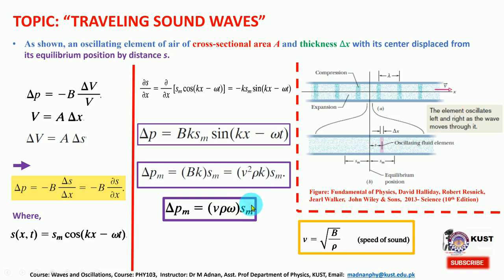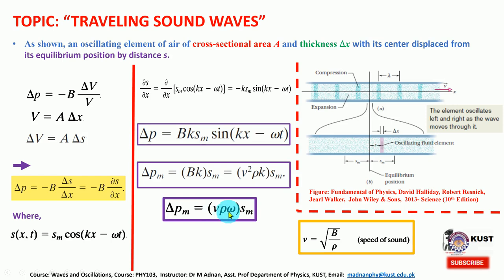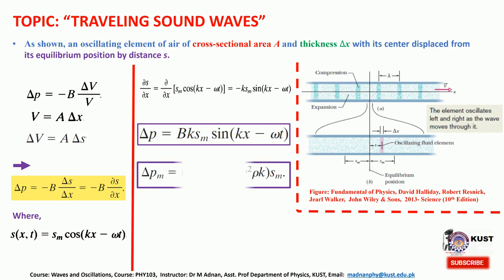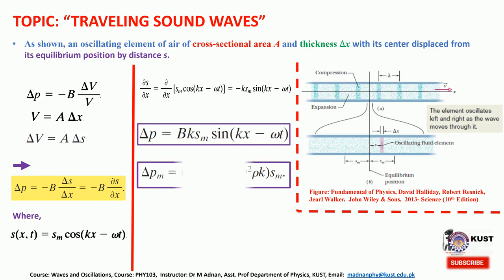If we use the relation v equals omega over k and eliminate k from the expression, the maximum pressure variation depends on the density of the medium and the frequency. The frequency is controlled by the source. So all the compression and pressure variation depends on these parameters.